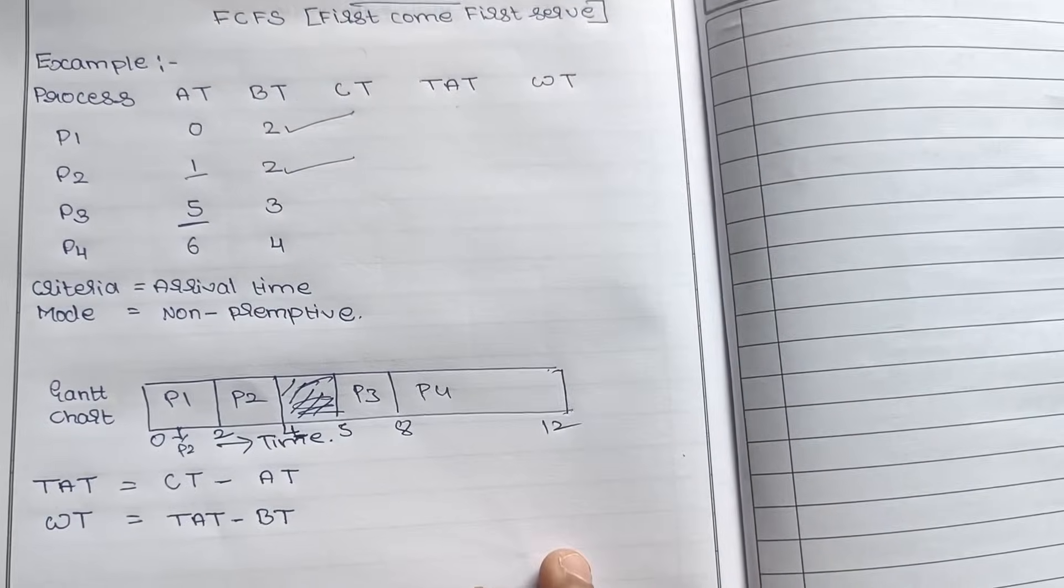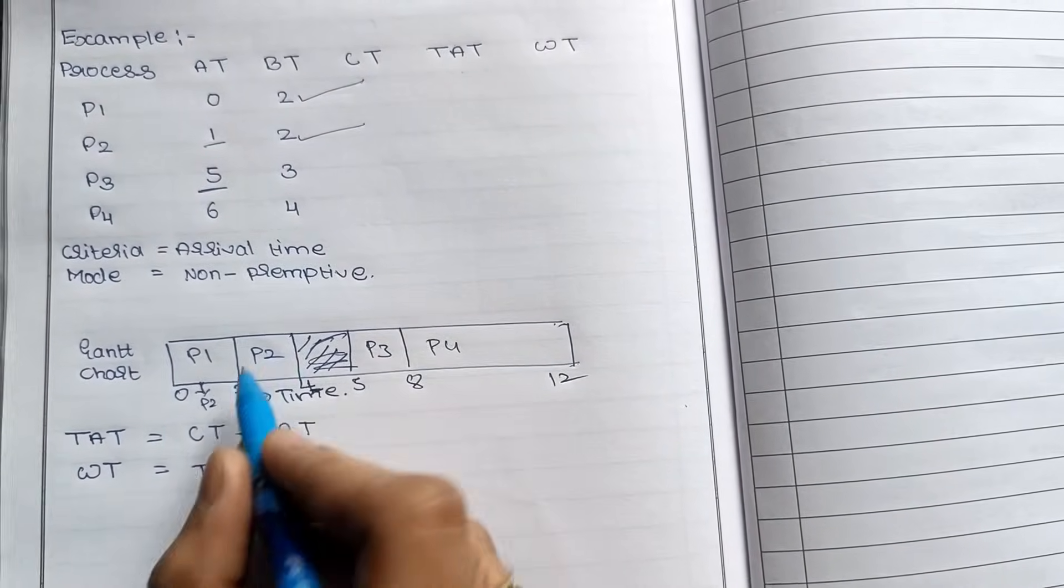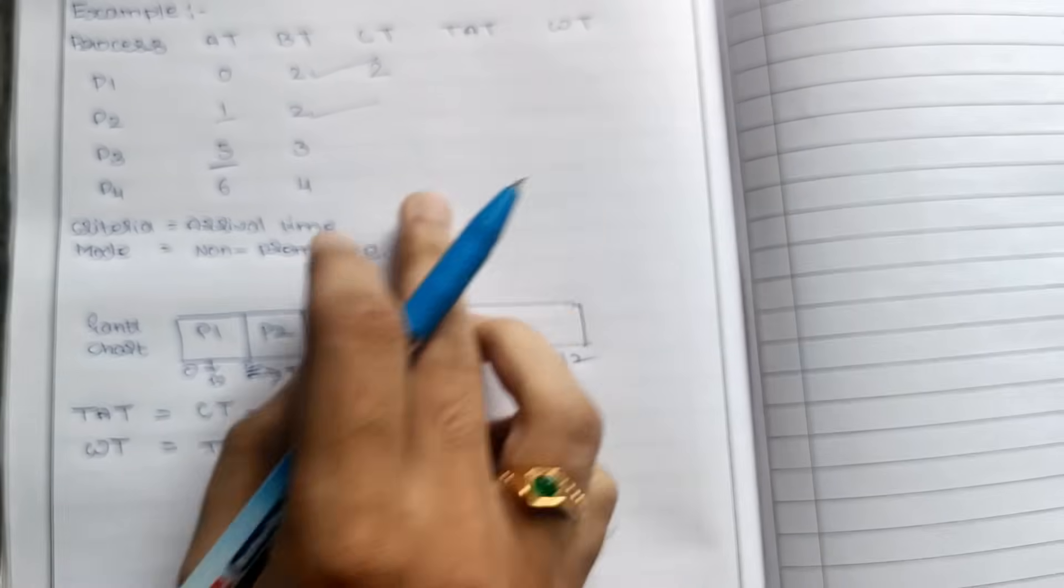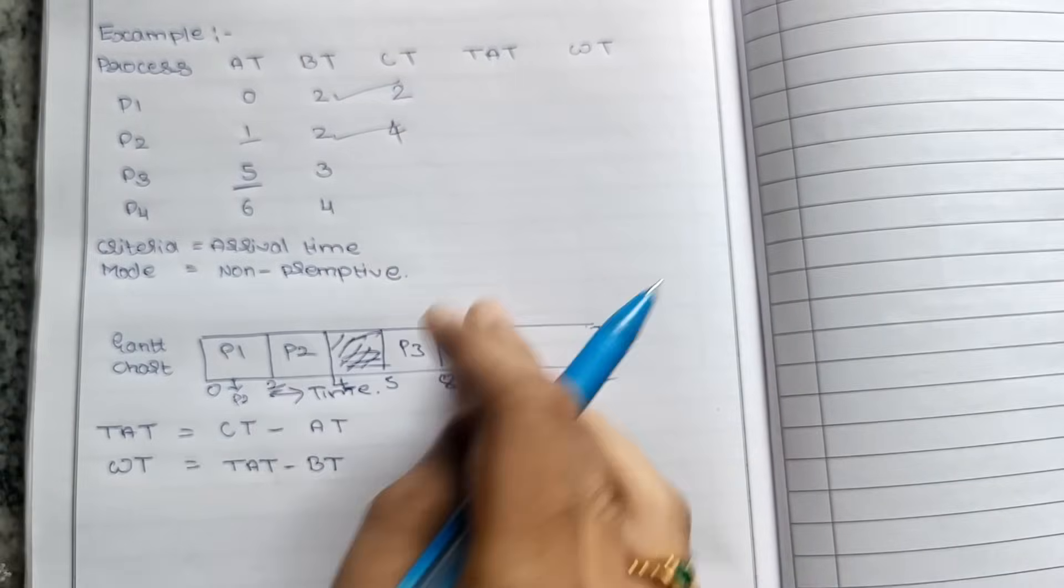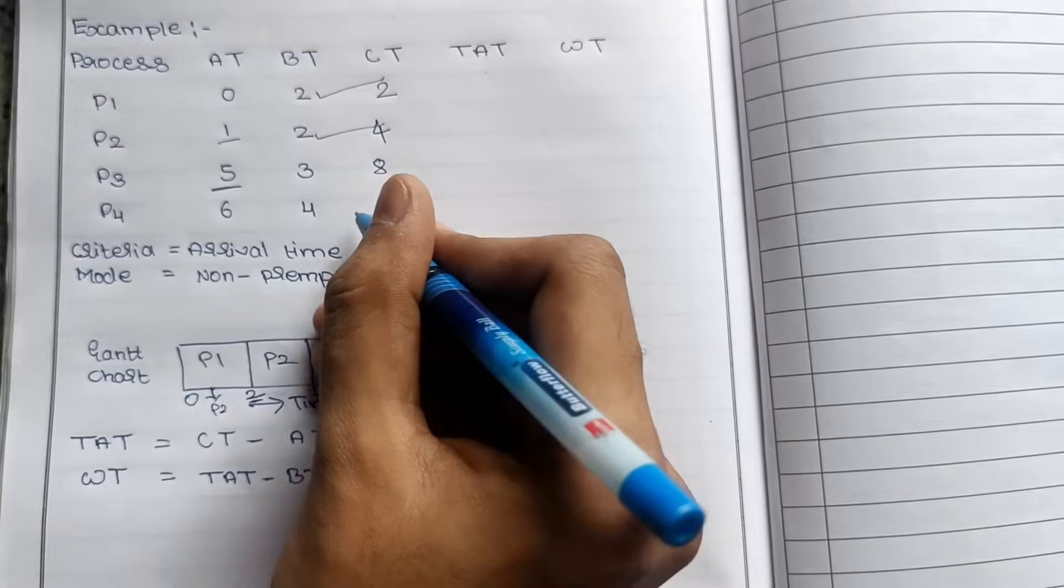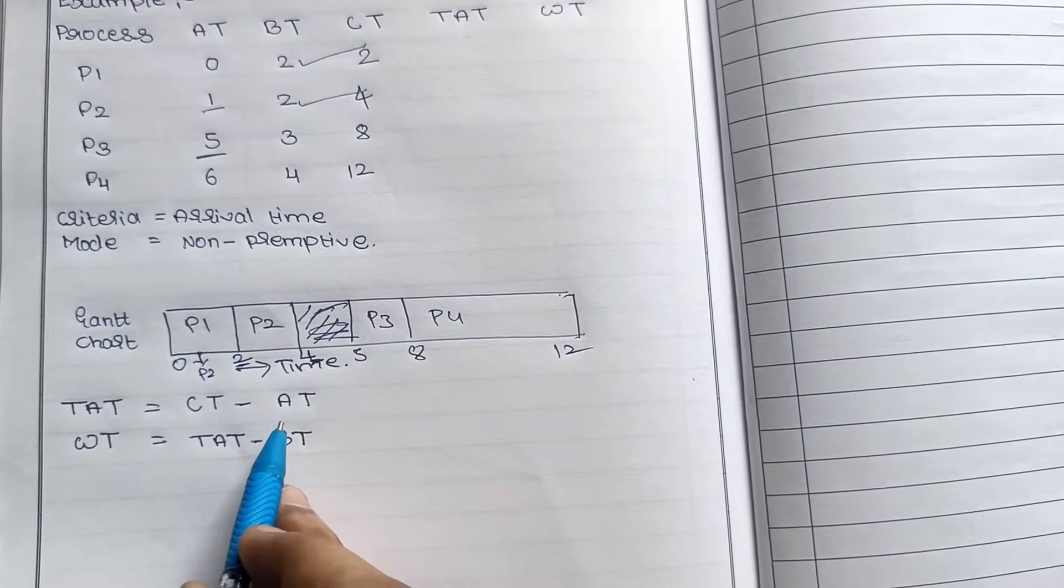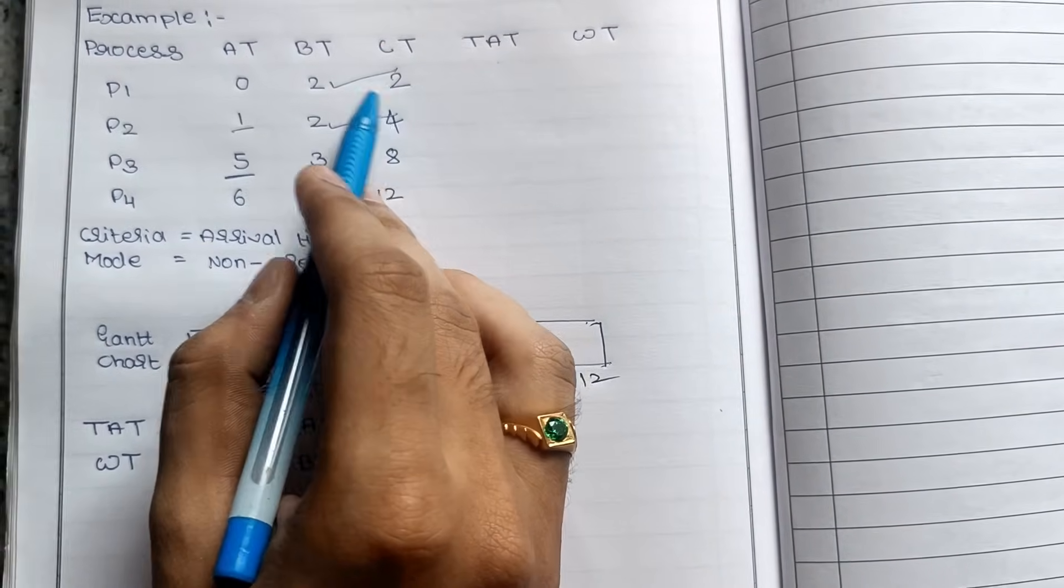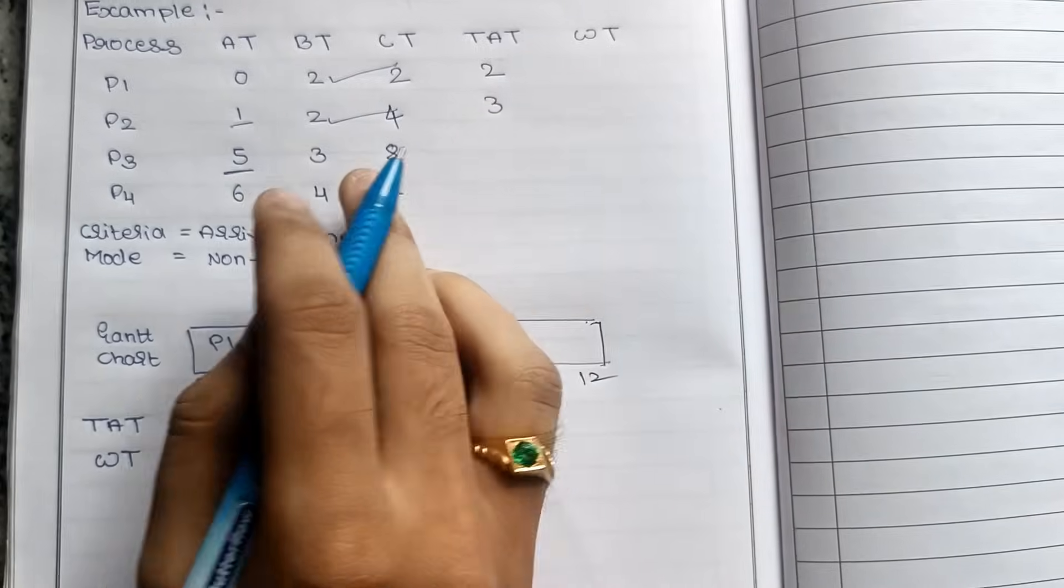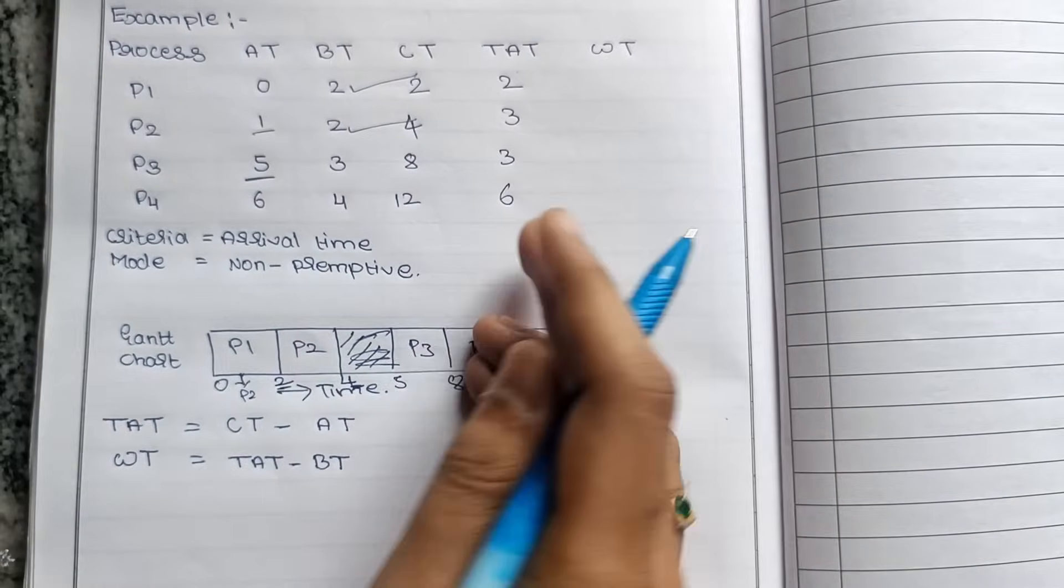The job is complete. Now we have to calculate completion time, turnaround time, and waiting time. Completion time is when each process completes, which we can see from the Gantt chart. P1 completes at 2, P2 completes at 4, P3 completes at 8, and P4 completes at 12. For turnaround time, we use completion time minus arrival time. So 2 minus 0 is 2, 4 minus 1 is 3, 8 minus 5 is 3, and 12 minus 6 is 6.